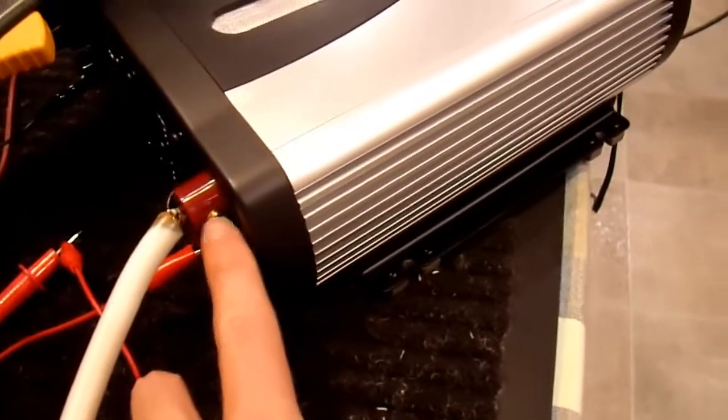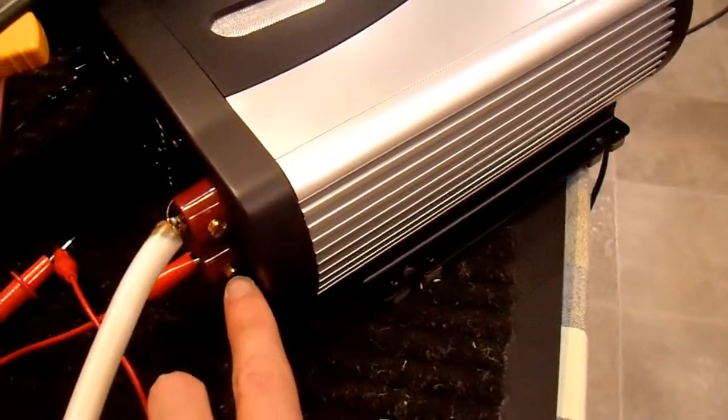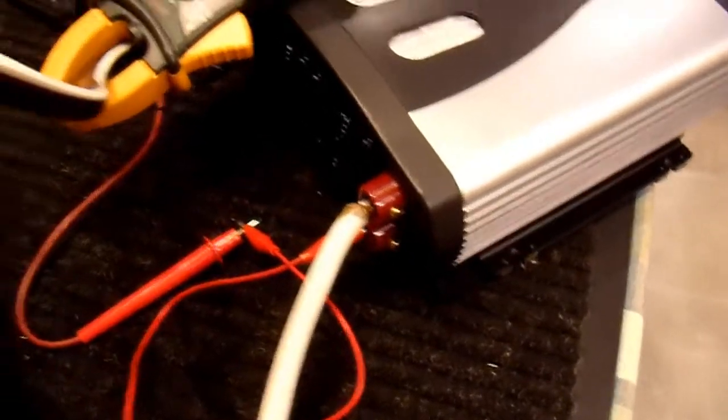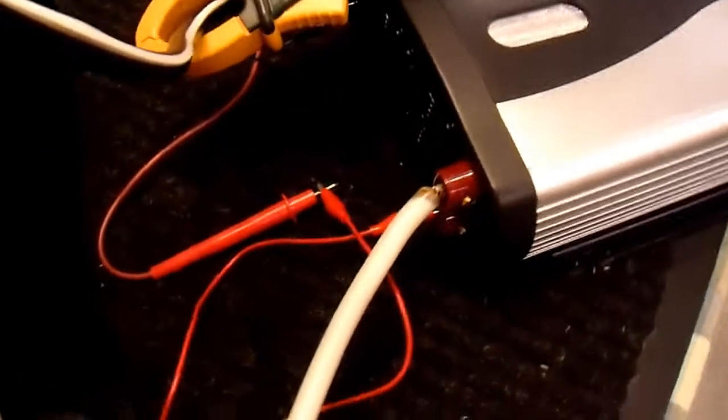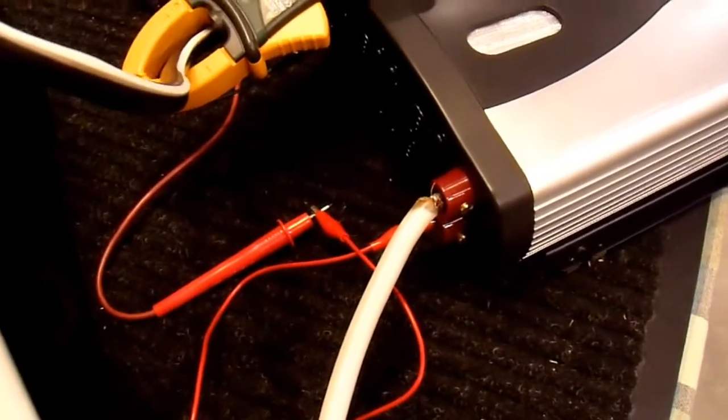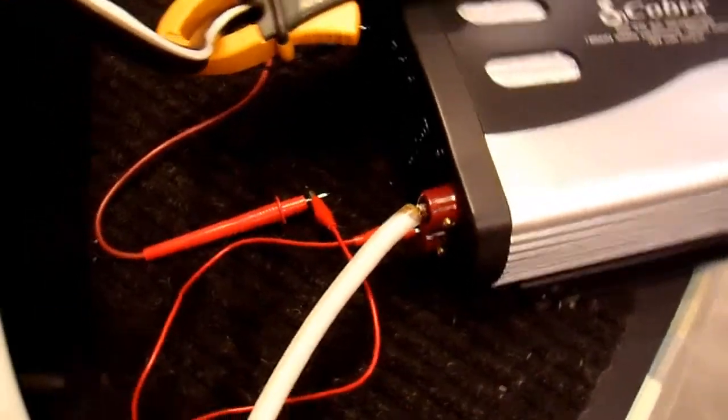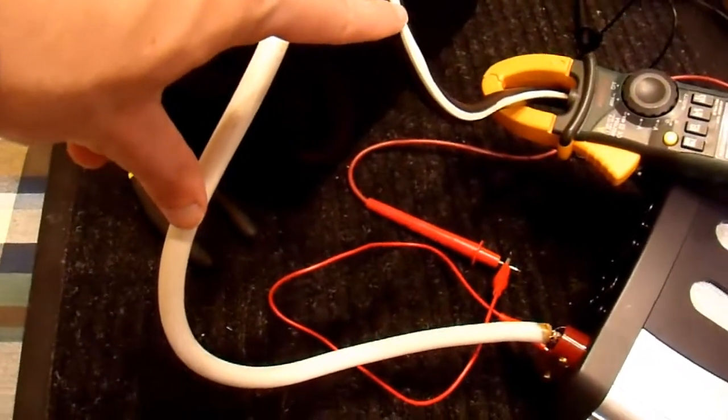Now, there are two lugs on here. They're four gauge in size. Two lugs for positive, two lugs for negative, and the astute viewer will note that I only have one of them connected. However, that's not going to be a problem because of their short length. That will work just fine.